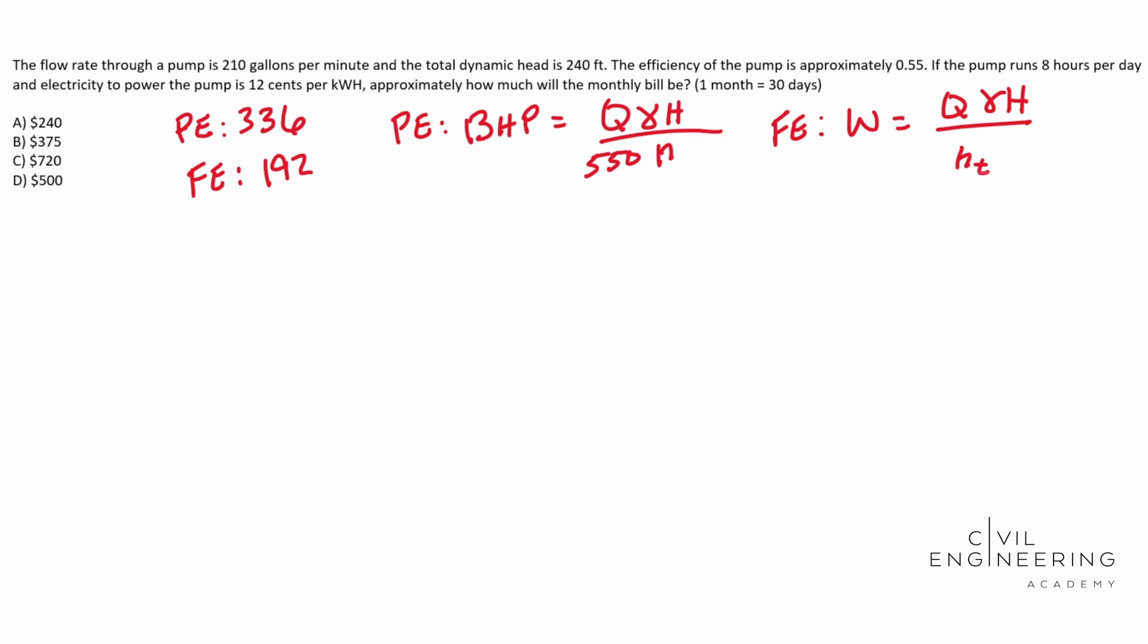In the FE however, it gives you something very similar. It gives you W is equal to your flow rate times your gamma times your head over just your pump efficiency. So very similar formulas. One is actually just a different unit than the other. That's really all it is. One horsepower is equal to 550 feet pounds of force per second and you can find that in the beginning of your manual. So we're going to go ahead and use the PE's formula for this, but it's a very simple conversion for the FE to get this into horsepower.